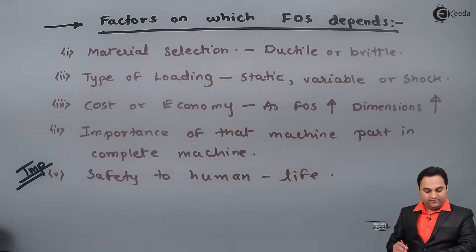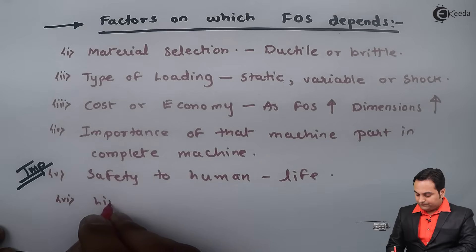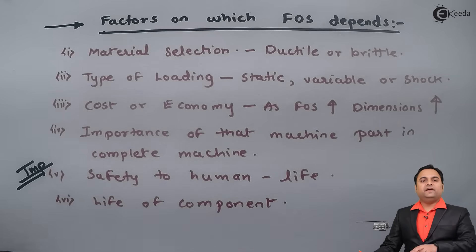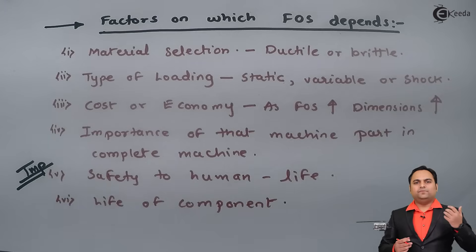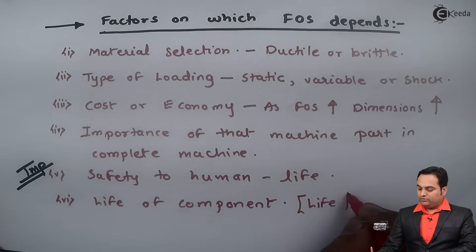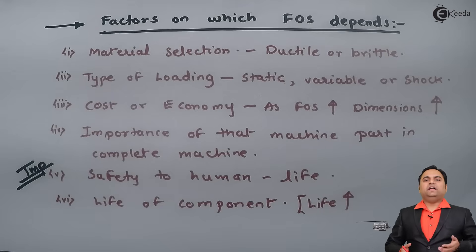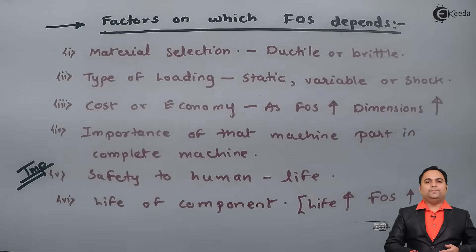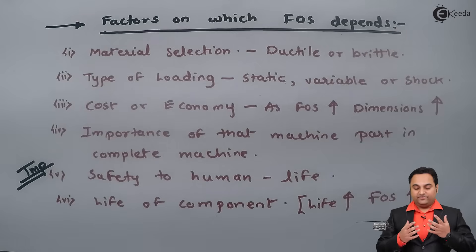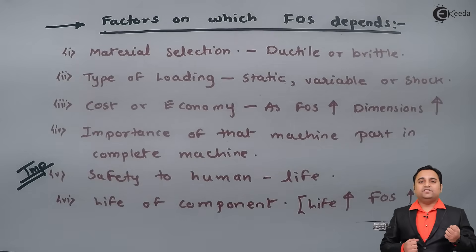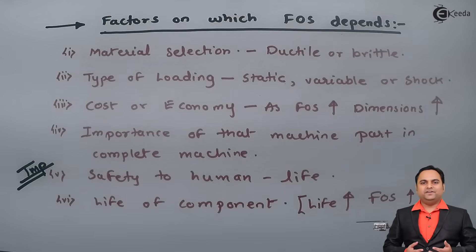The last factor is the life of the component. We design components for a specific period or number of years. If we want to increase the life of the product, we must increase the FOS value. In this video, we have seen the definition of factor of safety, its significance for ductile and brittle materials, and the factors on which it depends.